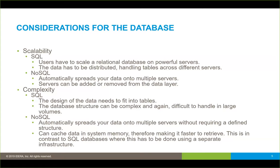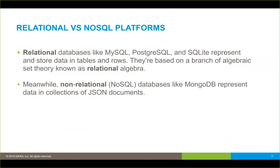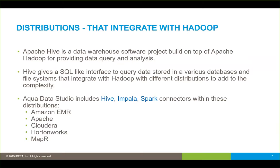NoSQL automatically spreads your data onto multiple servers and doesn't require a defined structure. It can cache data in system memory, making it faster to retrieve. But you still have a structure and a SQL platform where you have to deal with the rules of that particular database. The relational platforms — like MySQL, Postgres, Oracle, and SQL Server — are based on a branch of algebraic set theory known as relational algebra, meaning you have primary keys, foreign keys, and relationships on how you pull the data out. The non-relational NoSQL, like MongoDB, stores collections in JSON documents. You also have data warehouses that use tables and rows.